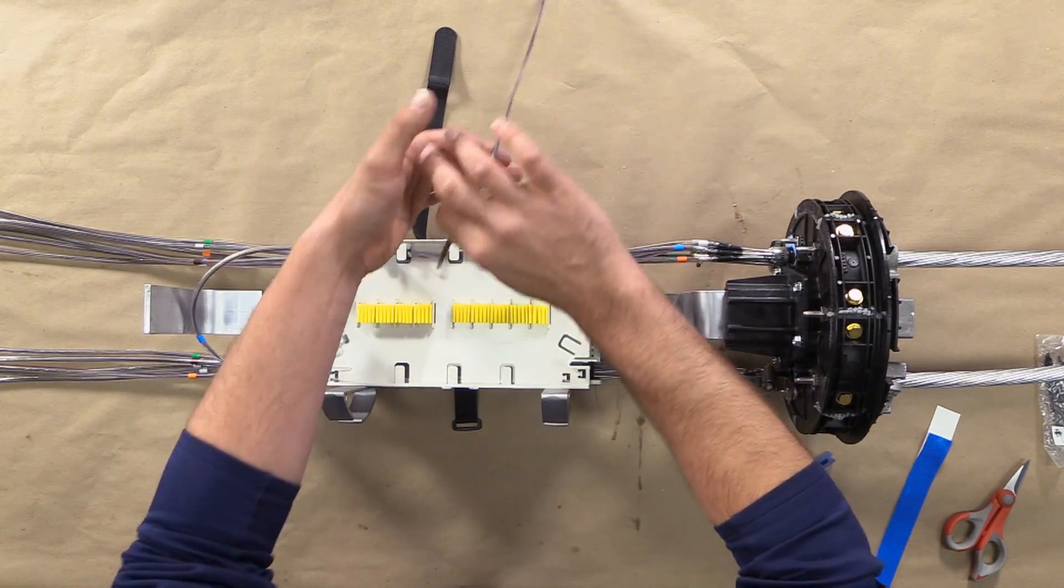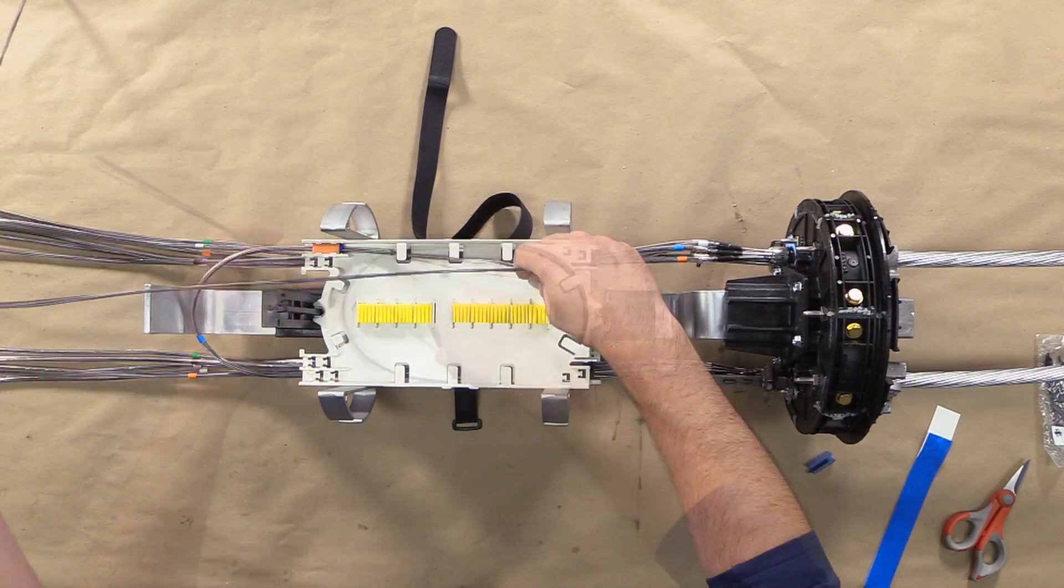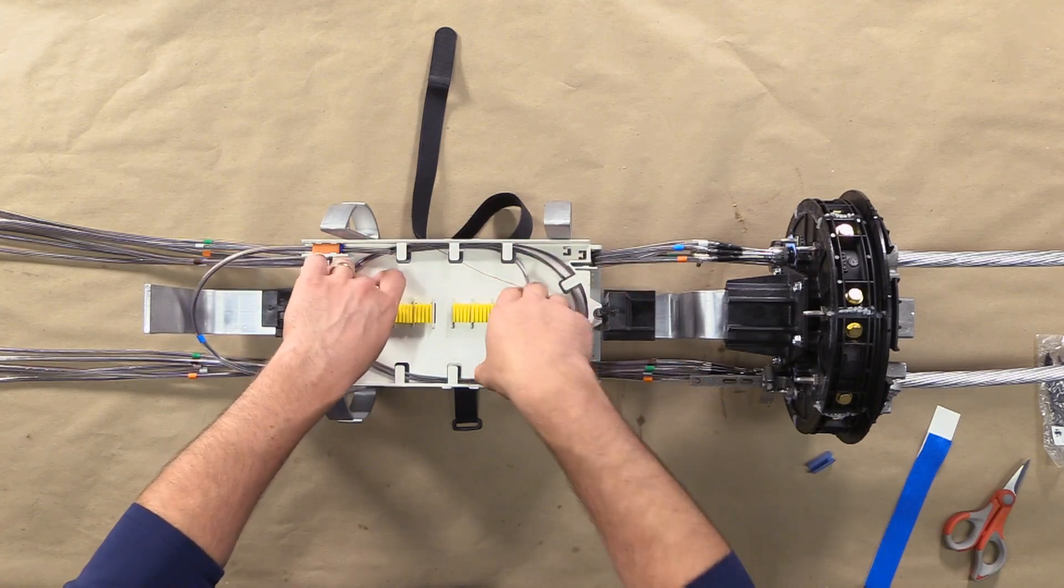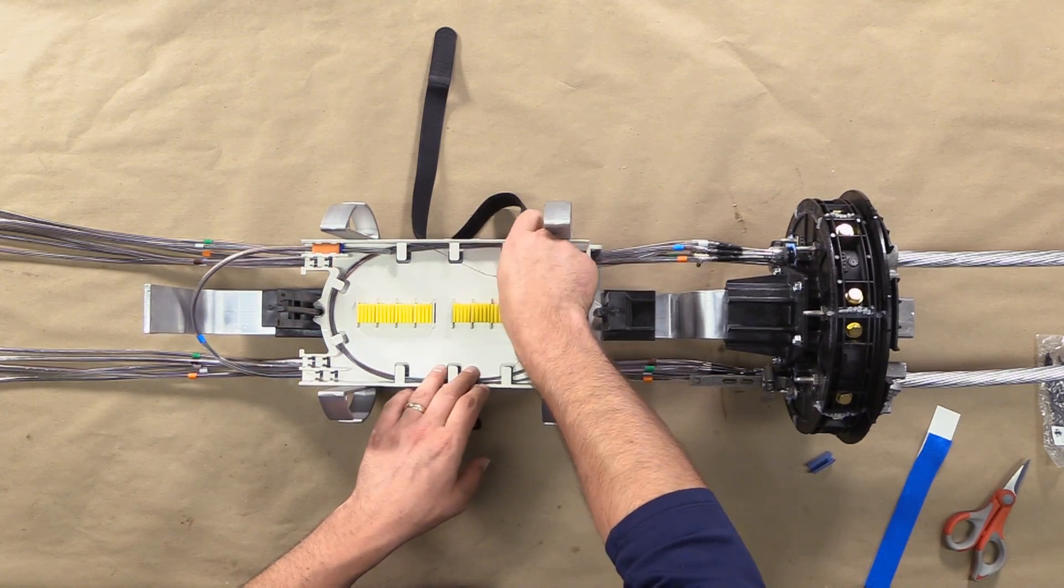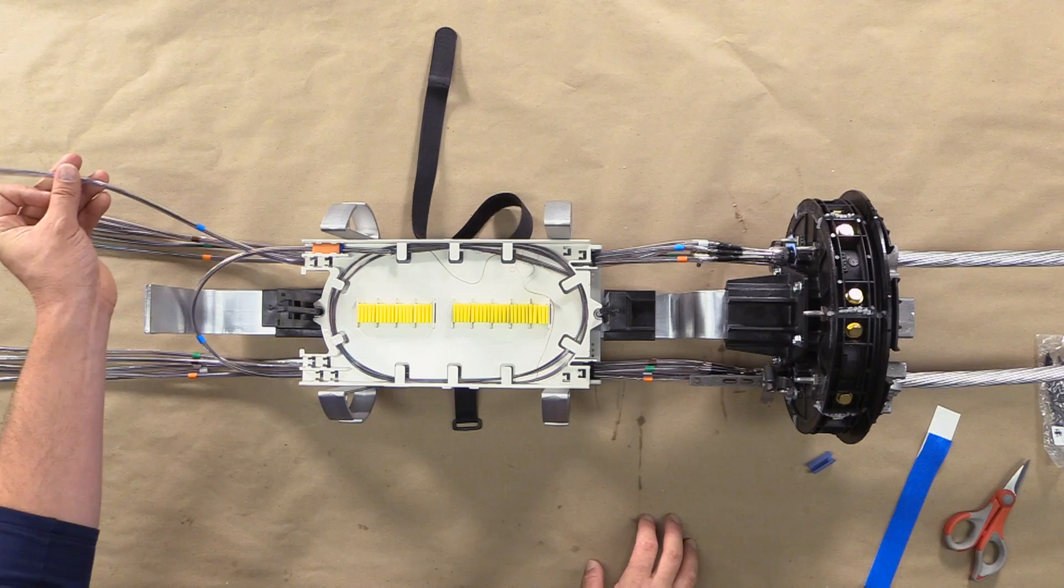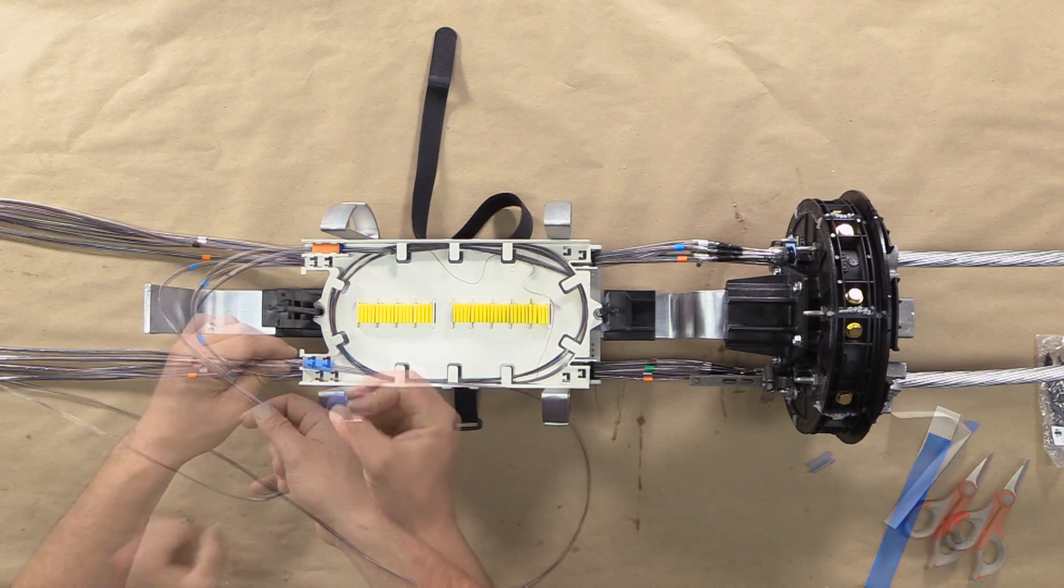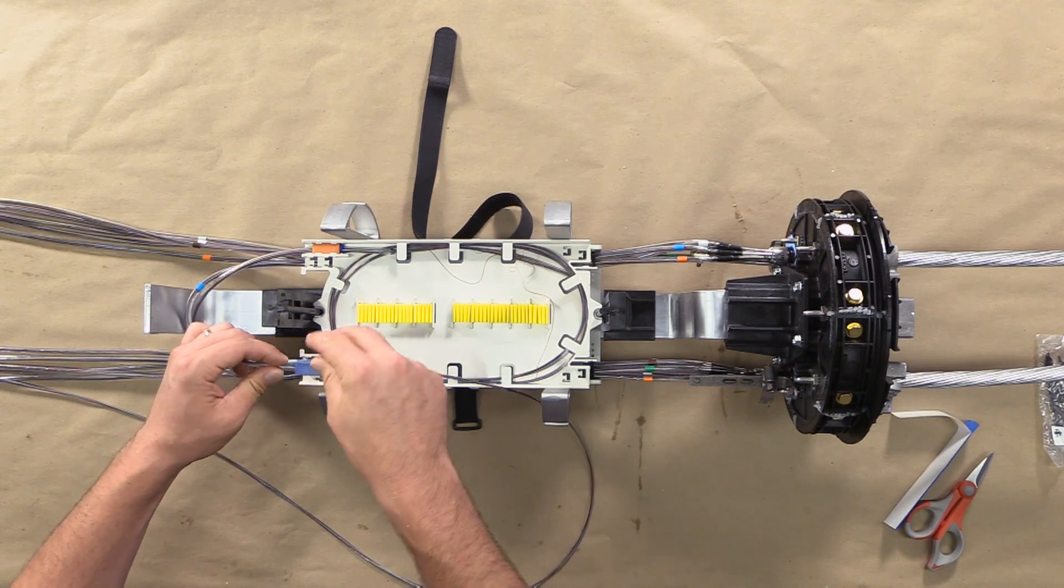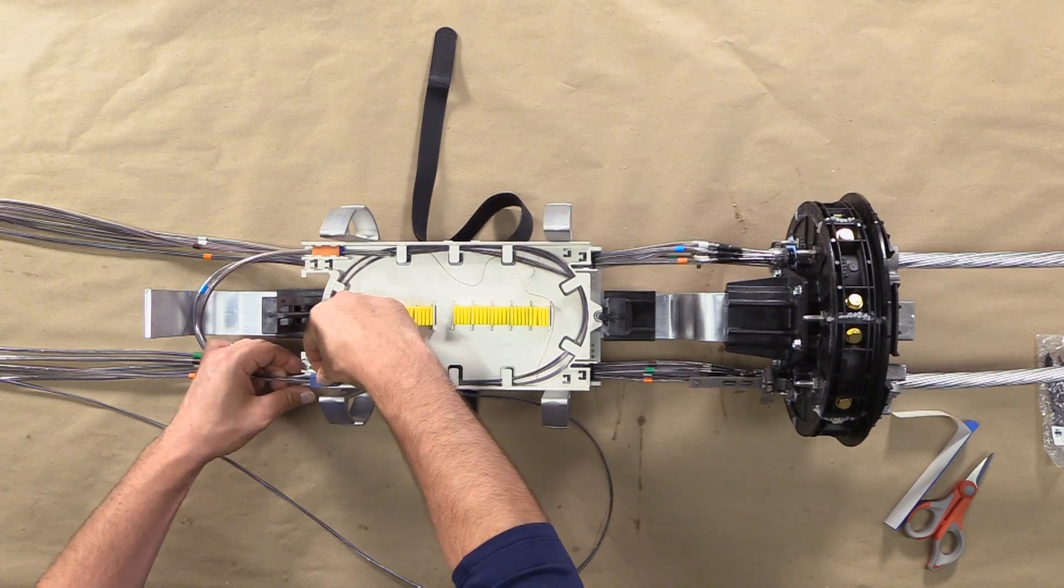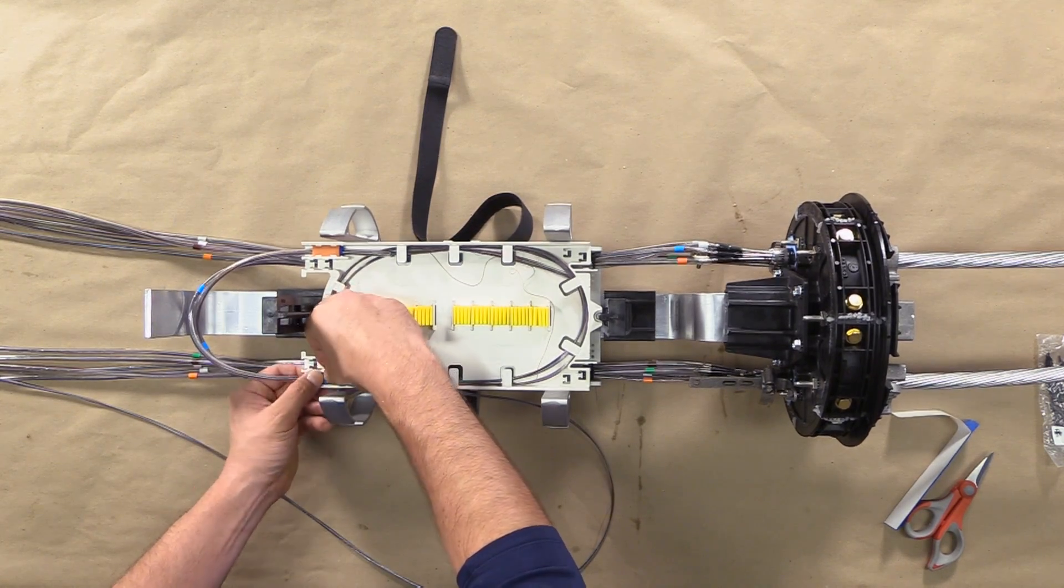Store fibers in the splice tray for future splicing. Repeat this process for each transition tube. Reinstall splice tray cover.